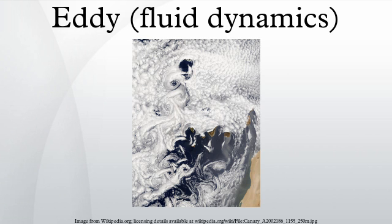Mesoscale ocean eddies: eddies are common in the ocean, and range in diameter from centimeters to hundreds of kilometers. The smallest-scale eddies may last for a matter of seconds, while the larger features may persist for months to years.